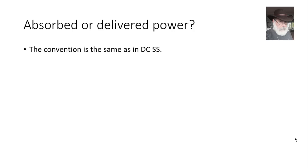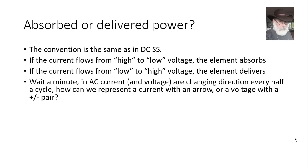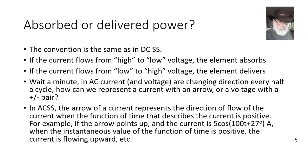The convention to determine whether a power is absorbed by an element or delivered by the element is the same one that we used in DC steady state. If the current is flowing from higher voltage to a lower voltage, the element is absorbing power. And if the opposite is true, then the element is delivering power. And some students say, wait a minute. What do you mean flowing from high to low? In AC, the current is changing direction all the time. Well, that is true. But the arrow of a current in AC is a convention. The arrow tells us what is the actual direction for the flow of the current when the function that describes that current is positive.